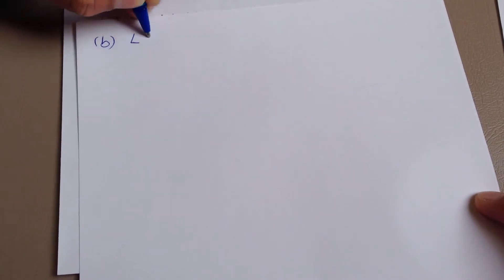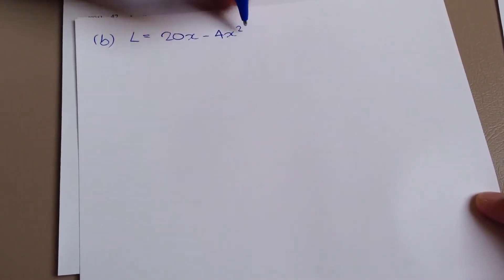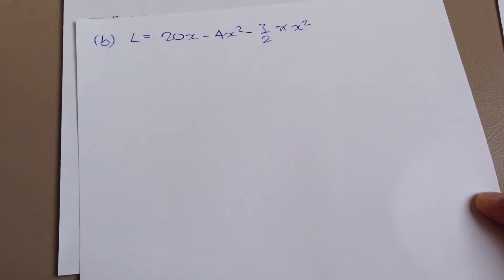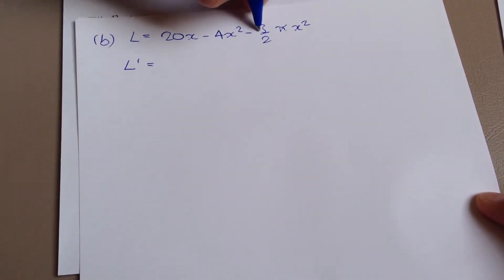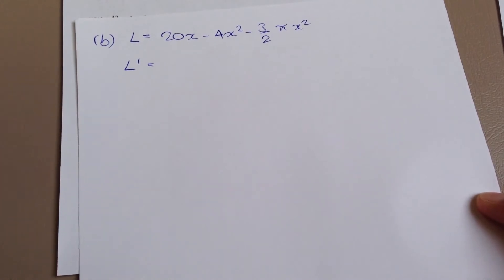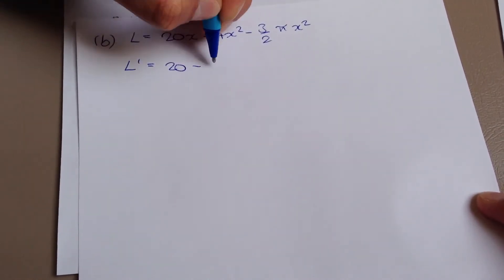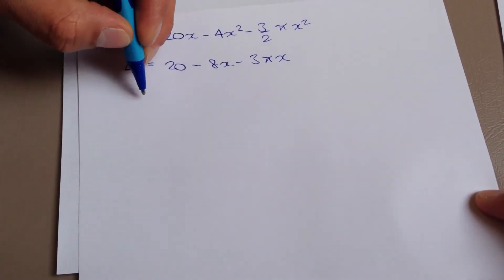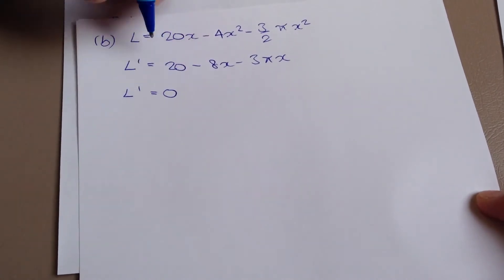This is part b. So l equals 20x minus 4x squared minus 3 halves pi x squared. So we're going to differentiate this. So l dash. And again, if anyone's not too sure about the differentiation process itself, please feel free to look at one of my other videos where I talk about differentiating. So if I differentiate this, that will leave me with 20 minus 8x minus 3 pi x. And again, I do have to make this statement in higher in order to obtain marks.